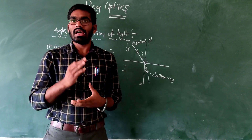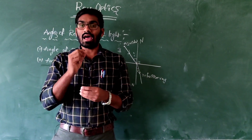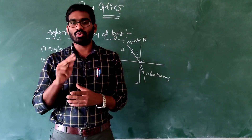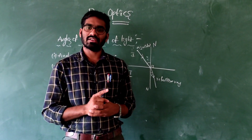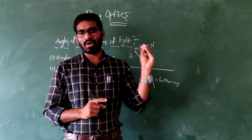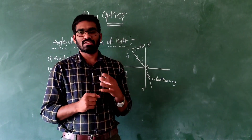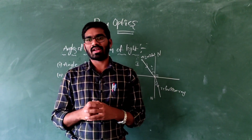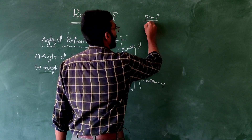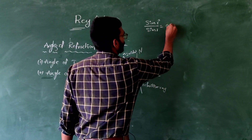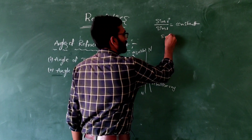Now I am going to discuss the laws of refraction. The law of refraction is mainly classified into two laws. The first law of refraction states that when light travels from one medium to another medium, there is no change in wavelength, frequency, and velocity. The second law of refraction can be mathematically expressed as sin i divided by sin r equals a constant. This equation is also known as Snell's law.